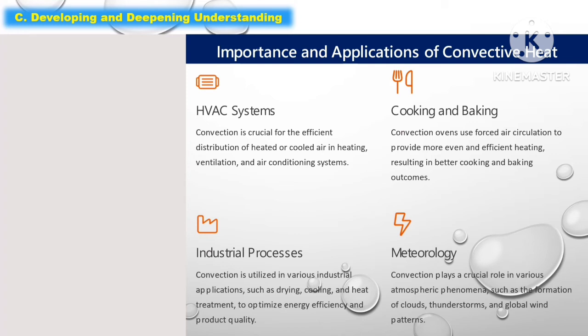The following are the importance and applications of convection heat. The first is HVAC systems — convection is crucial for the efficient distribution of heated or cold air in heating, ventilation, and air conditioning systems. The second is cooking and baking — convection ovens use forced air circulation to provide more even and efficient heating, resulting in better cooking and baking outcomes. The third is industrial processes — convection is utilized in various industrial applications such as drying, cooling, and heat treatment to optimize energy efficiency and product quality. The fourth is meteorology — convection plays a crucial role in atmospheric phenomena such as the formation of clouds, thunderstorms.